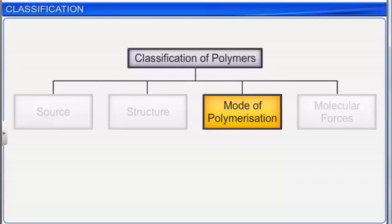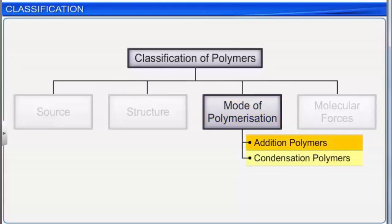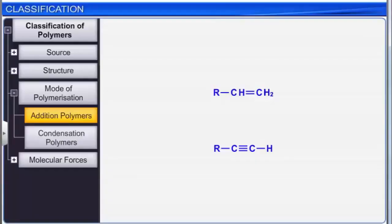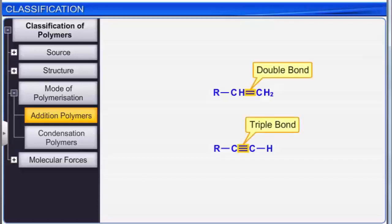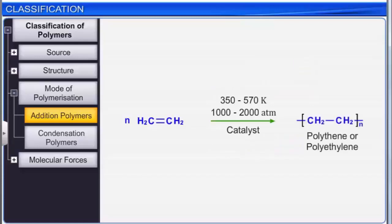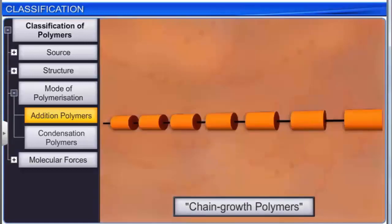On the basis of the mode of polymerization, polymers are classified into two categories: addition polymers and condensation polymers. Addition polymers are formed by the repeated addition of monomers containing double or triple bonds. The reaction involves breaking of pi bonds. Addition polymers are sometimes referred to as chain growth polymers.